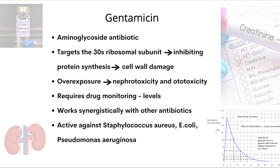Gentamicin is an aminoglycoside antibiotic which targets the 30S ribosomal unit of the bacteria, causing inhibition of protein synthesis which ultimately leads to cell wall damage. The well-known effects of nephrotoxicity and ototoxicity occur with overdose or overexposure, and drug monitoring via taking levels is a big thing with gentamicin and other aminoglycosides. Gentamicin works synergistically with other antibiotics, in particular the beta-lactams, which also target the cell wall of the bacteria. It targets a select few but important pathogens including Staph aureus, E. coli, and Pseudomonas.